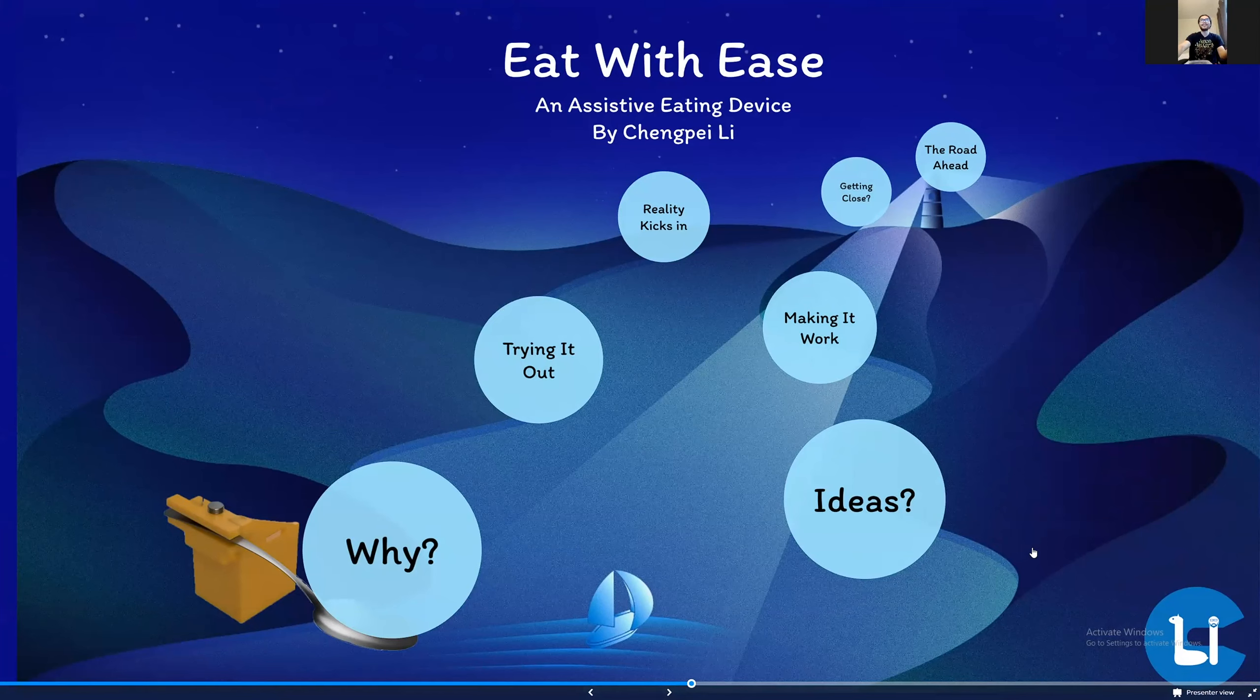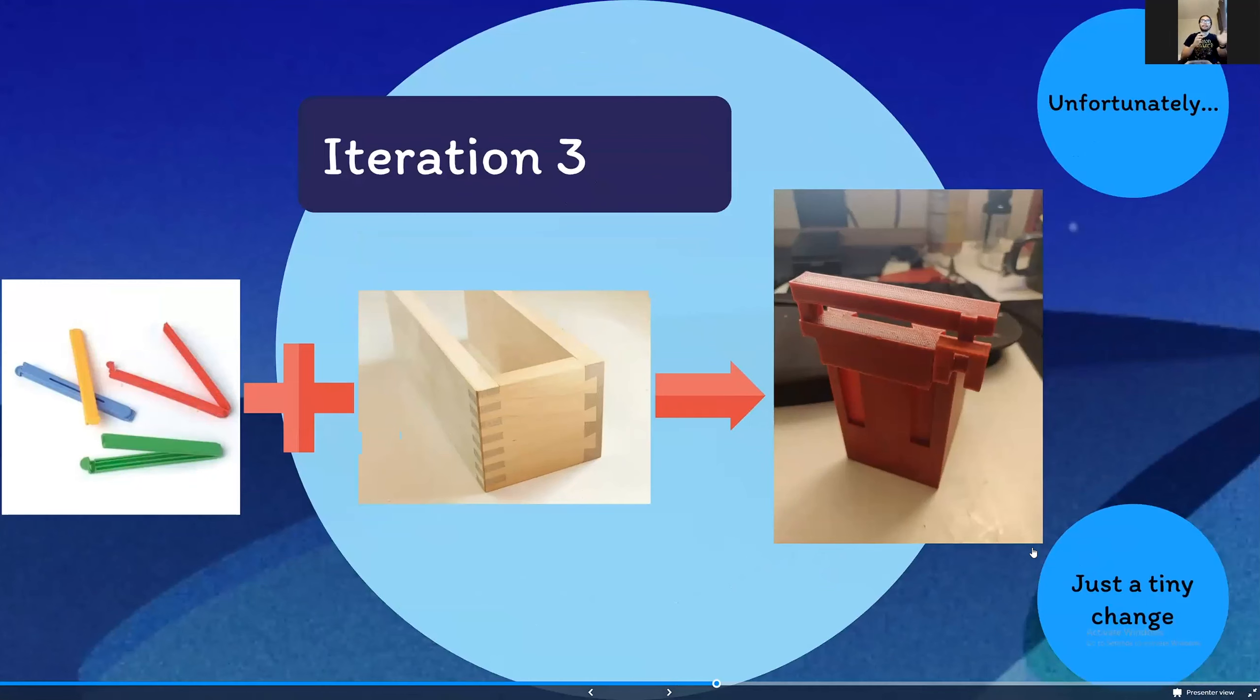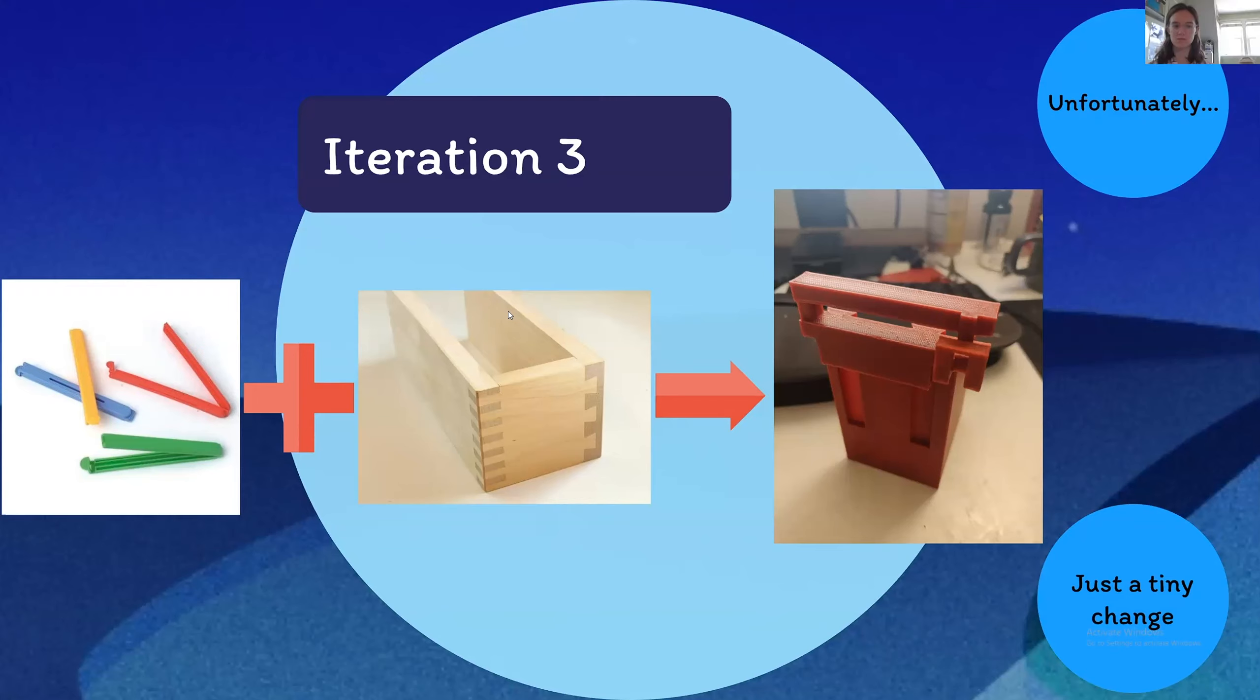That's when reality kind of kicked in. This next iteration I took inspiration from two different things: snap clips and dovetail joints. Snap clips are clips that kind of just clip down where the force distribution is kind of uniform. The idea with the dovetail joint is that I would be able to switch it out for different utensils even during eating. So those two together came to this iteration of the design.